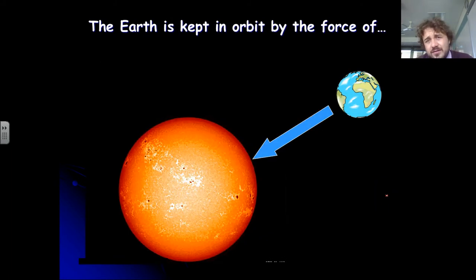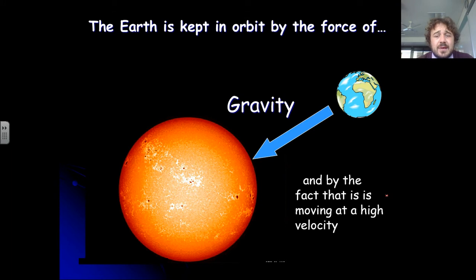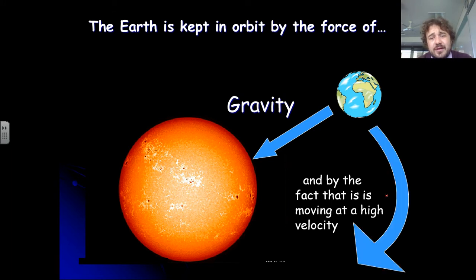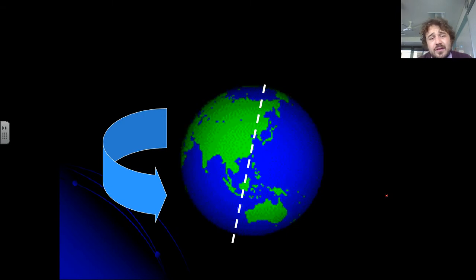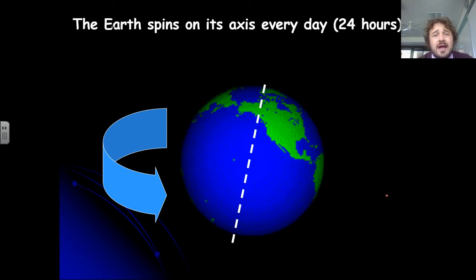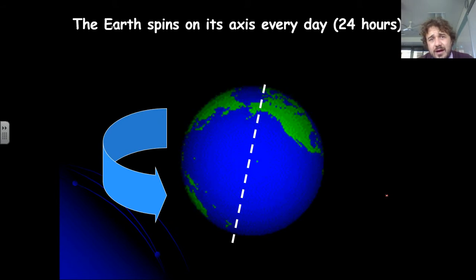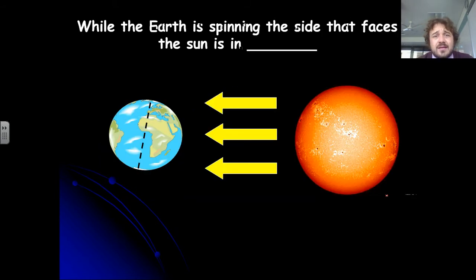You should know by now the force that keeps the Earth in orbit, and that's gravity. And this is why it moves at such a high speed around the sun, because it's essentially falling. So it spins around its axis like this, and that takes 24 hours.